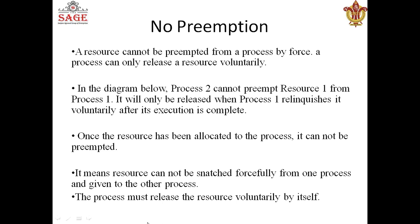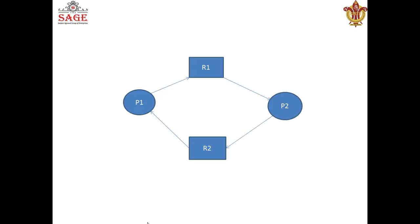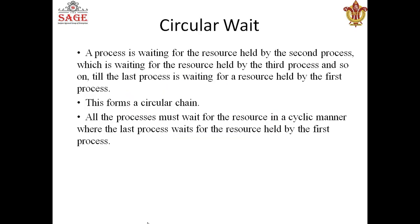This is the condition of no preemption — we cannot take a resource from a process; it will only release it after it completes its execution. The fourth condition is circular wait. Circular wait is when a process is waiting for a resource held by a second process, which is waiting for a resource held by a third process.